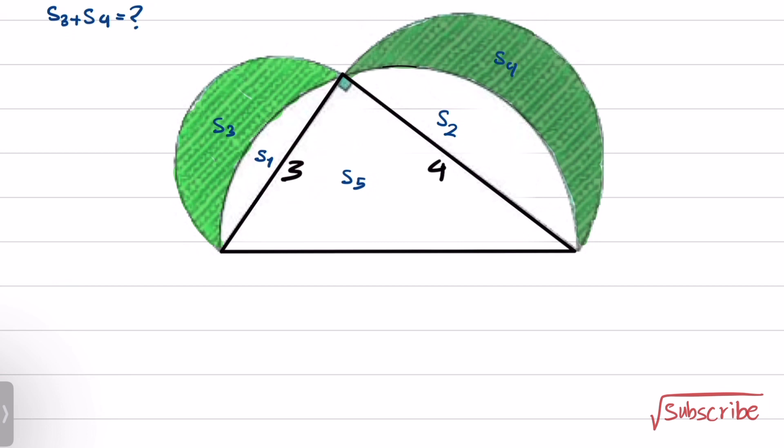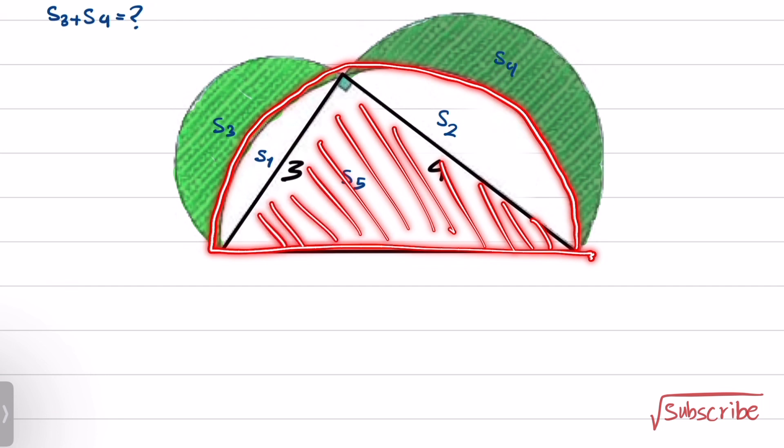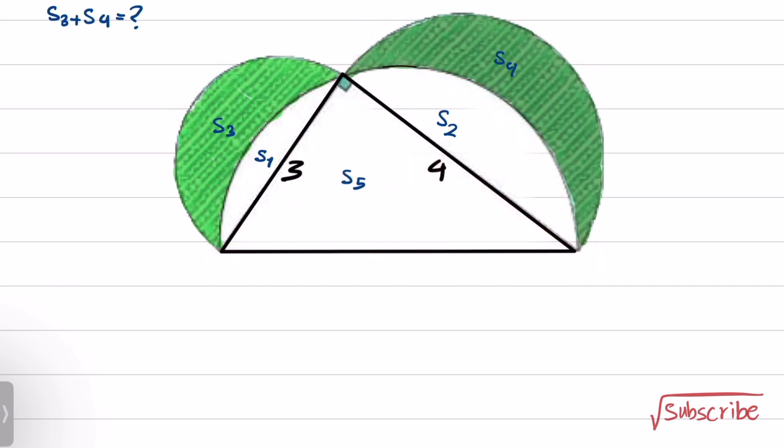In order to obtain S1 and S2, we can use this half circle. If we subtract the area of the right triangle from this half circle, we have the area of S1 and S2. We know that in right triangles, hypotenuse is obtained as square root of a squared plus b squared. This will give us 16 plus 9, square root of 25 equals 5.